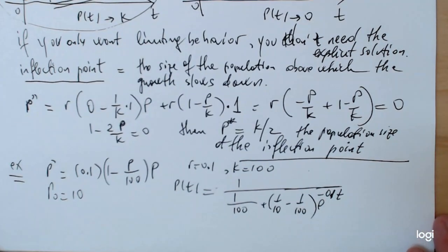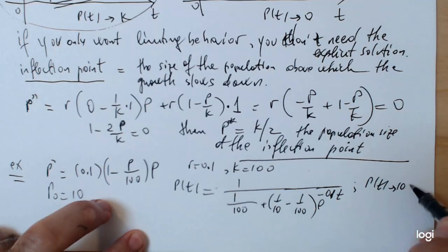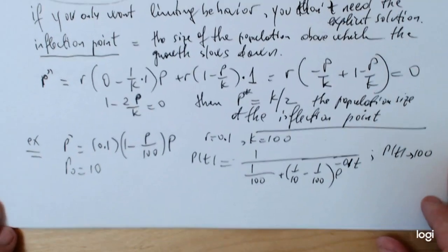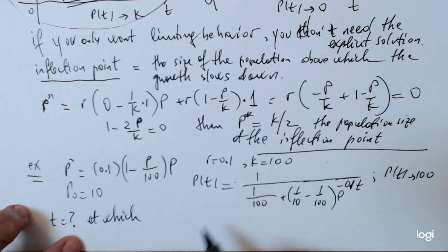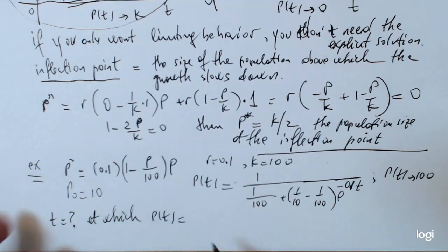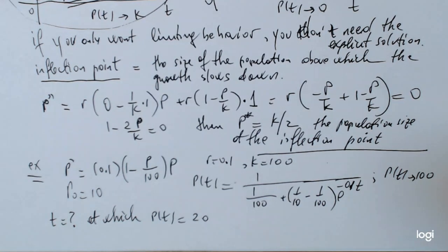So, let's say, because we know the limiting behavior, right, we start with something between 0 and 100. p0 is 10, we know already that p of t goes to 100. But let's say that I want to know the time at which p of t reaches the size equal to 20. Right? So, somewhere between 10 and 100, the population should get to 20 people. And I want the exact time when that happens. And so, for that, whenever you actually ask a question about the time, you need the explicit solution.